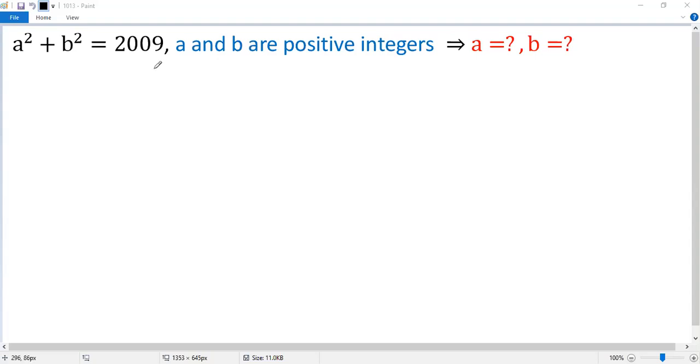To solve the Diophantine equation, let's look at the right side number first. You can check 7 is a factor of 2009.